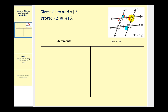Now I think we have the connection we need. Looking at the parallel lines L and M cut by transversal T, angle seven and angle 15 are also corresponding angles and therefore congruent. So it looks like we can use the vertical angle definition, the corresponding angles postulate twice, and then the transitive property to show that angle two and angle 15 are congruent.